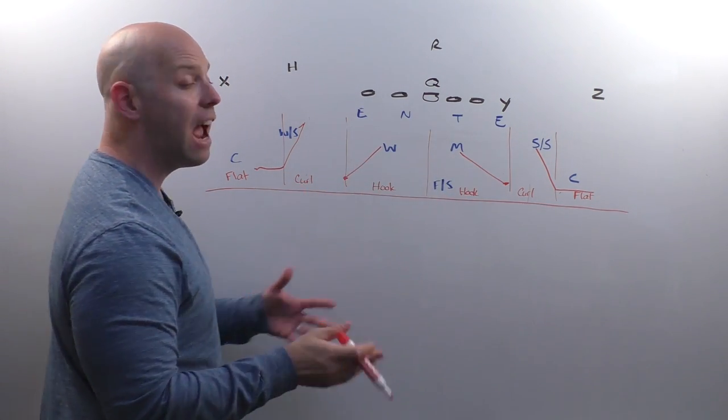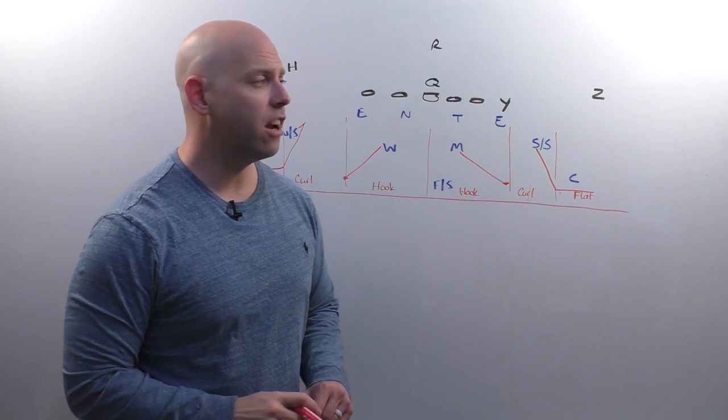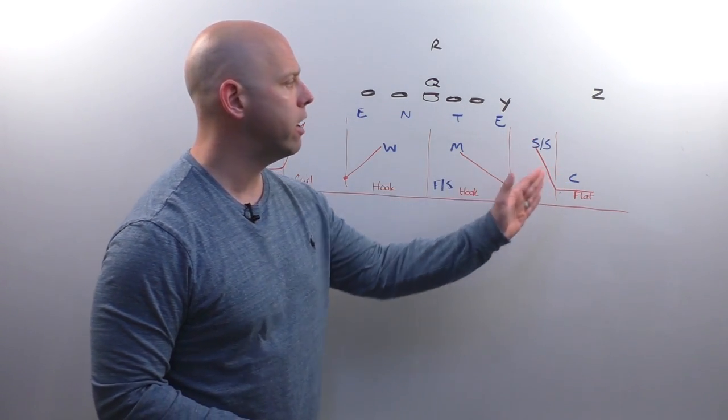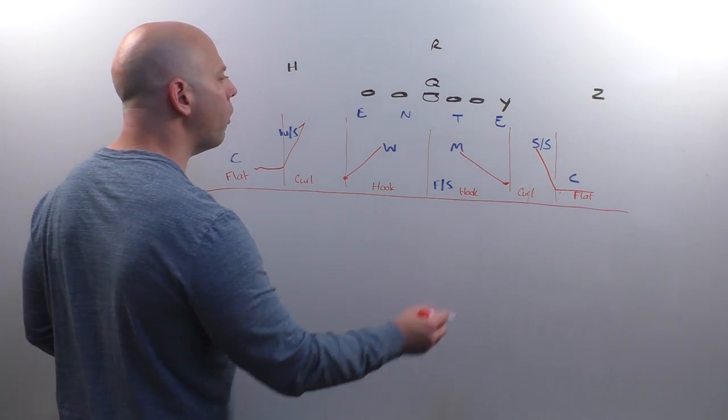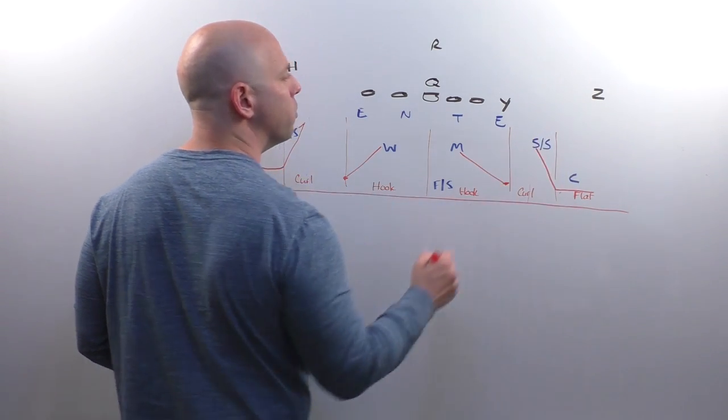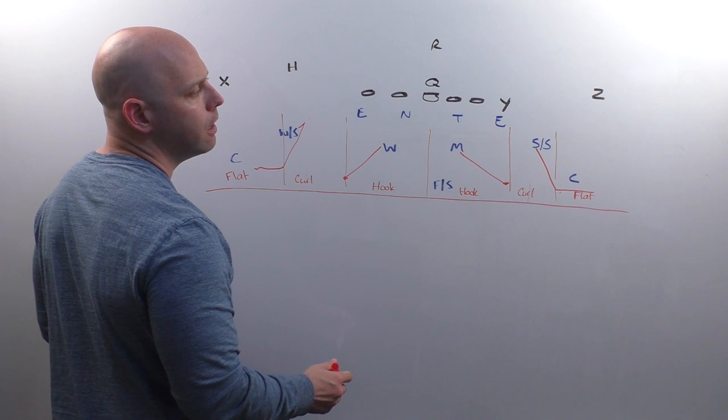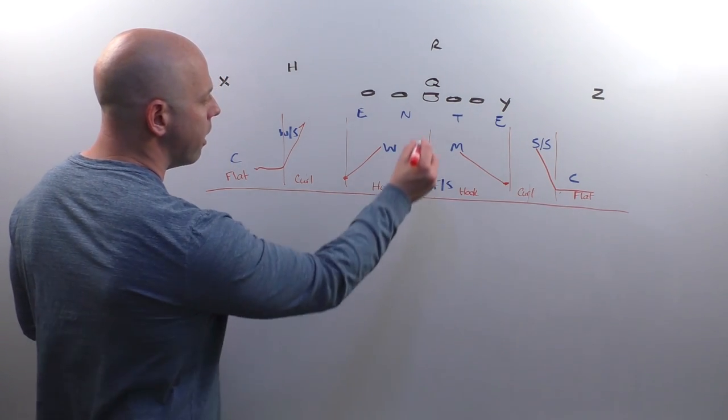So we're dropping to the hash and then an area halfway between hash and numbers and getting our width from there. The reason we can do that out here is because these routes take a little while to get to the flat. For us, as long as we keep our leverage, we can drive up on those flat throws and make a tackle for a short gain if we need to.